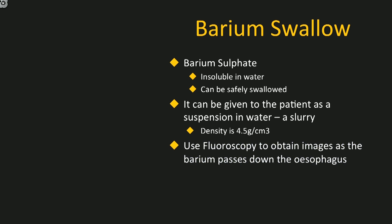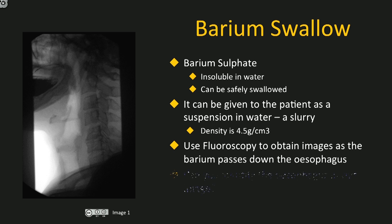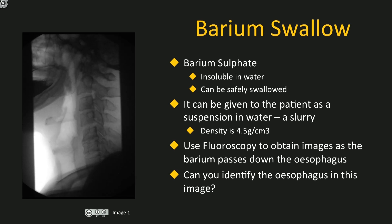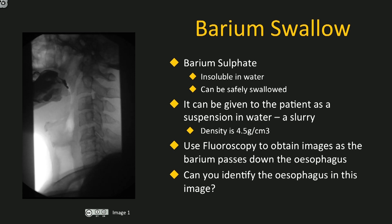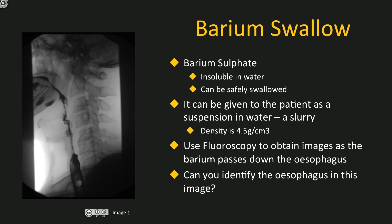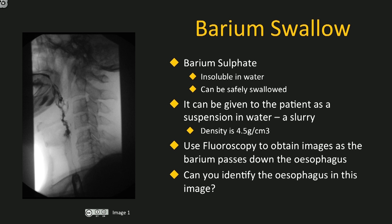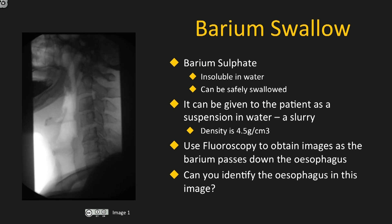The radiographer then takes a series of images using a technique called fluoroscopy. This is done as the patient drinks or swallows the slurry. Here is an x-ray before starting — can you pick the esophagus in this image? What about now? You can easily see the esophagus as the slurry passes to the stomach. If there was a partial obstruction in the esophagus or a leak, it could be very easy to see.